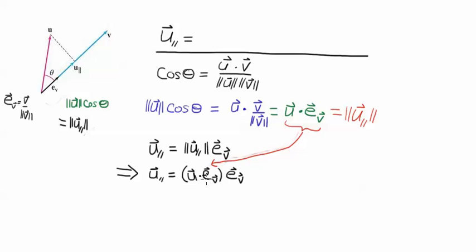It's u dot ev. And then remember that this is the scalar product, and that will give us the magnitude of u parallel. And then, of course, we have to multiply that by ev to make it a vector, because this is indeed a vector.